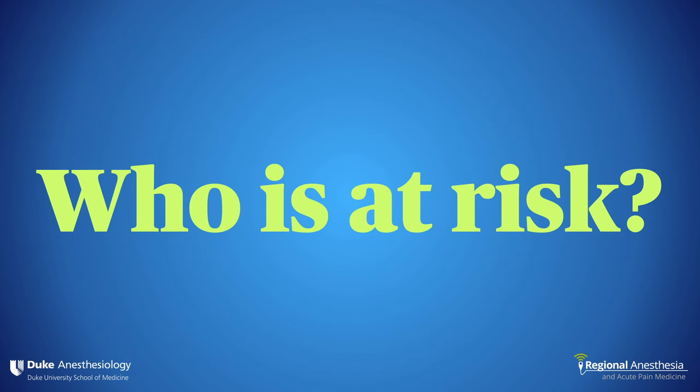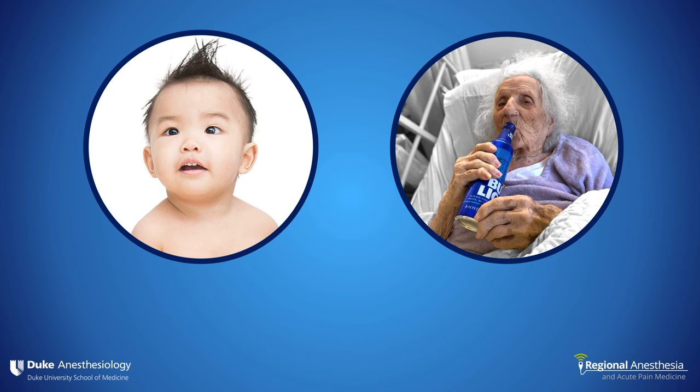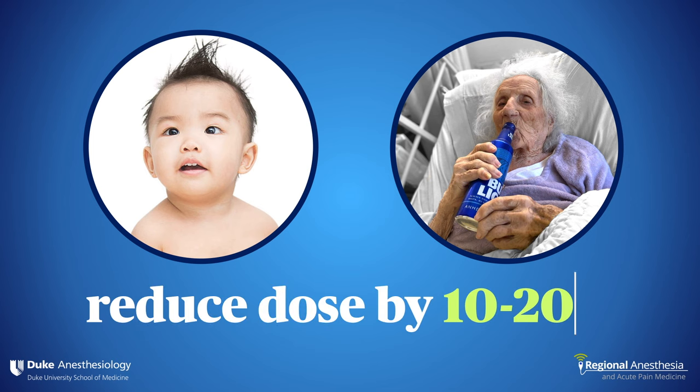Certain populations are at higher risk for LAST. The extremes of age are in that category. Elderly people have cardiac comorbidities that lower the threshold for rhythm disturbances or pump failure, and decreased muscle mass means less neutral reservoir for local anesthetics. Babies under six months of age have decreased muscle mass as well as immature hepatic biotransformation pathways, meaning plasma levels may be elevated — particularly since they also have reduced concentrations of alpha-1 acid glycoprotein, a protein that binds local anesthetics in plasma.